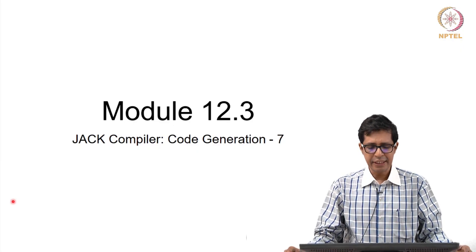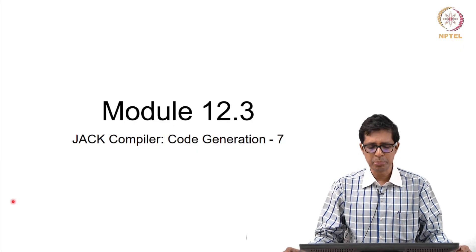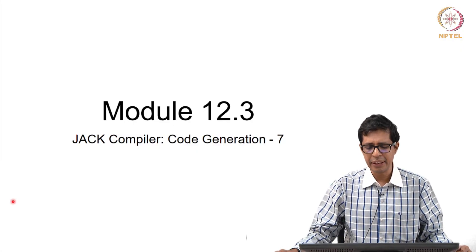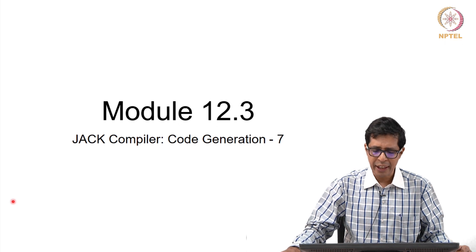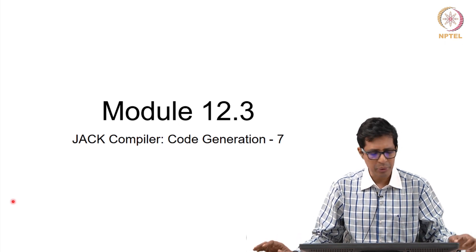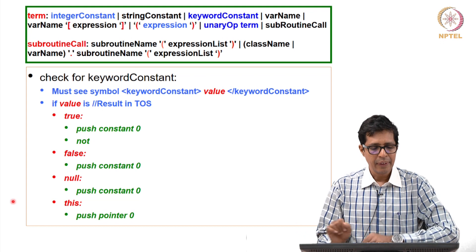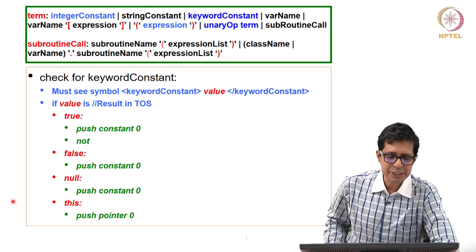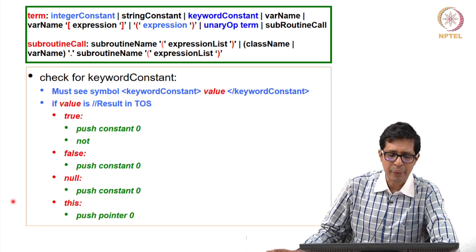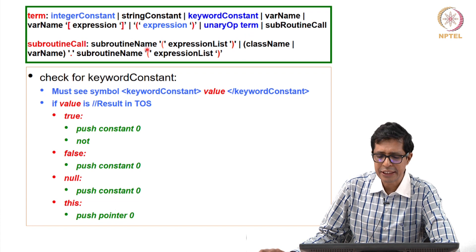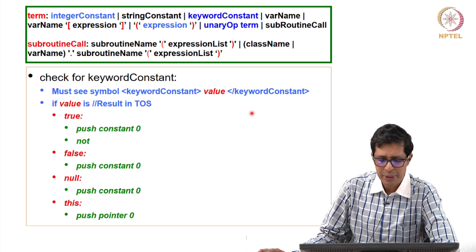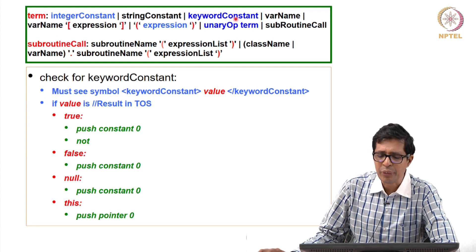Welcome to module 12.3. In this module we will be going ahead with code generation. We are now doing compile term, in which we have completed integer constant expression and unary of term, and now we will see keyword constant.